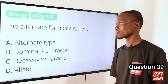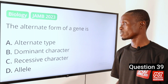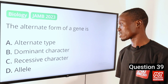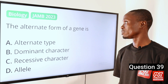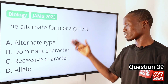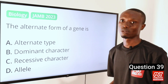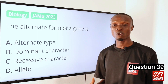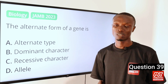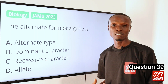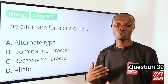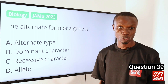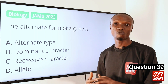Question 39. The alternate form of a gene is: A. Alternate type. B. Dominant character. C. Recessive character. D. Allele. The answer is option D, allele. An allele is found at the same locus on a chromosome and often comes in different versions, with each version bringing about different phenotypic traits. That makes option D the correct answer.